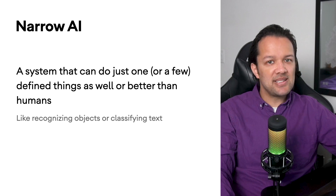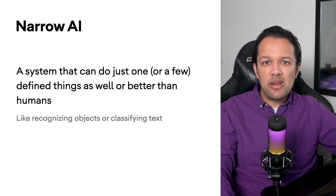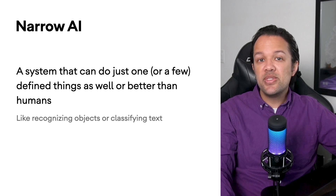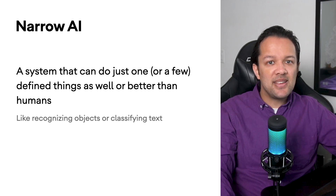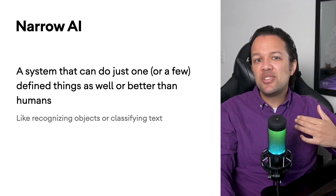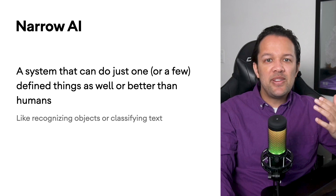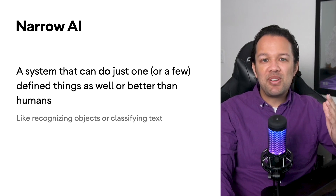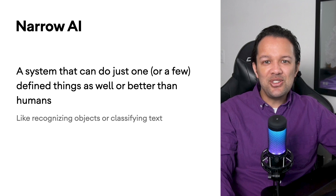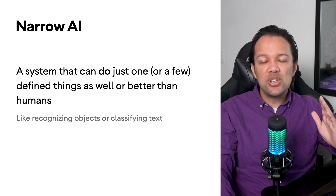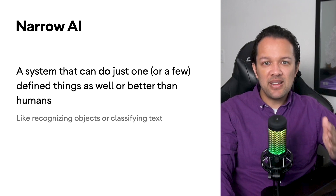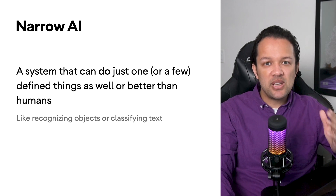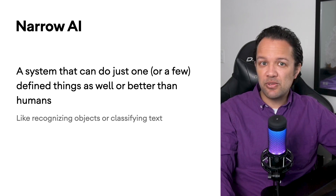A great example would be text classification. As a web developer, you may have at some point been asked to make a contact form where the user writes a message, that message is sent to the company, and someone then decides what sub-team it should be forwarded to. With advances in technology, we can now train a system to automatically route the message to the correct team based on its content, given enough examples to learn from. Pretty useful, right?